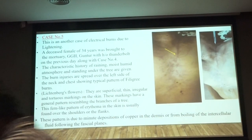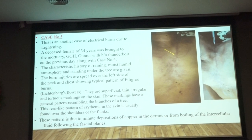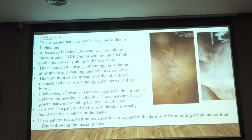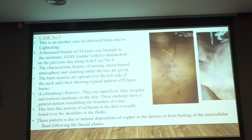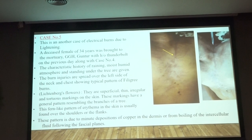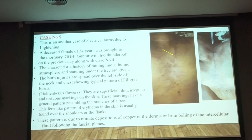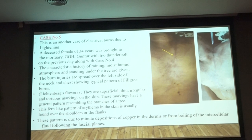Another case is a second lady from the same incident as case four, standing beside her. She also has lightning burns, but in this case she has the pattern of filigree burns covering from the left side of the neck to the left side of the chest. These are superficial, irregular, and tortuous marks on the skin, with a fern-like pattern resembling the branches of a tree. This pattern is due to the minute deposition of copper in the dermis, or from the boiling of extracellular fluid following the superficial veins.